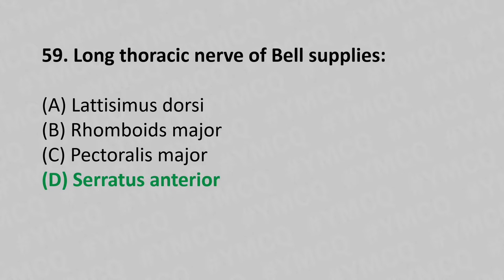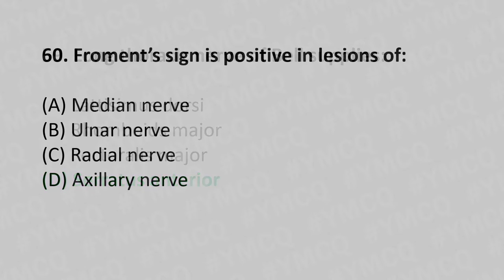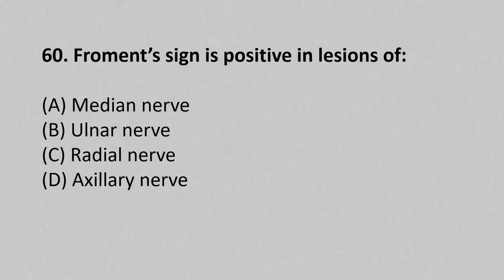Moving to our 60th question. Froment's sign is positive in lesion of: Option A, Median nerve; Option B, Ulnar nerve; Option C, Radial nerve; Option D, Axillary nerve. And the answer is Option B, Ulnar nerve.